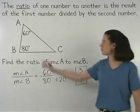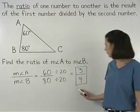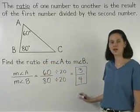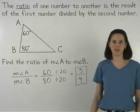So the ratio of the measure of angle A to the measure of angle B is 3 fourths. Remember to always reduce if possible when finding a ratio.